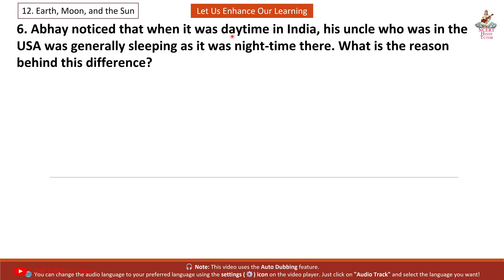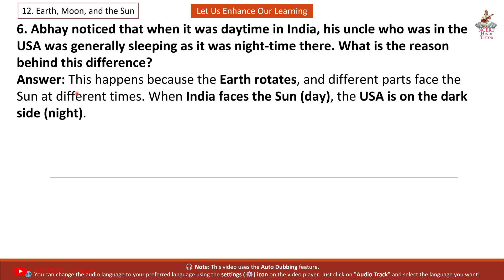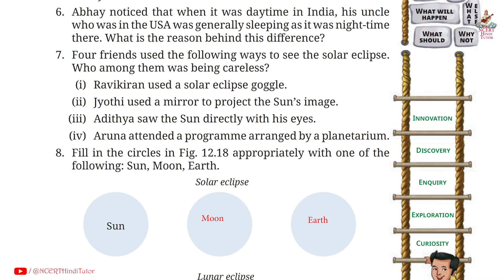Question 6. Abhay noticed that when it was daytime in India, his uncle who was in the USA was generally sleeping as it was nighttime there. What is the reason behind this difference? Answer: This happens because the Earth rotates and different parts face the Sun at different times. When India faces the Sun — day — the USA is on the dark side — night.